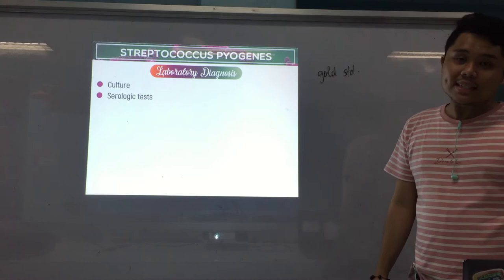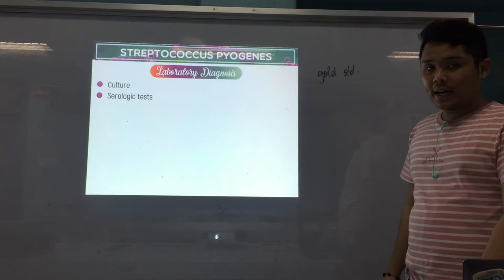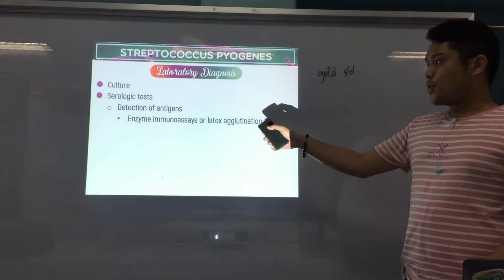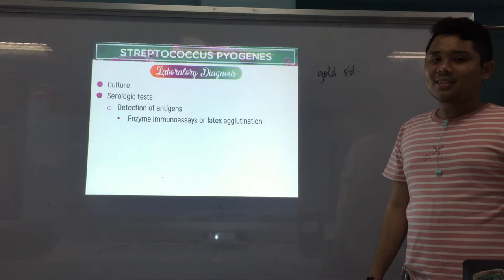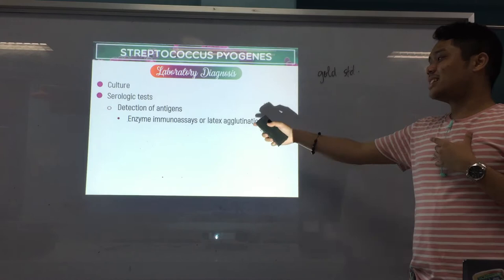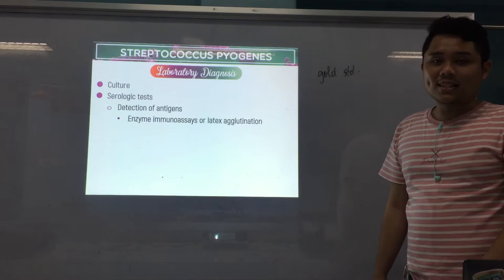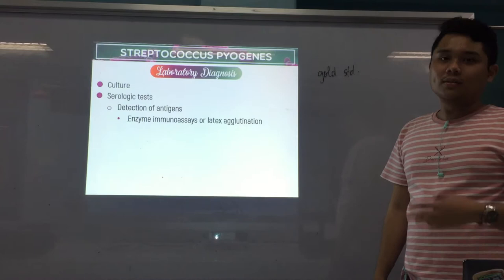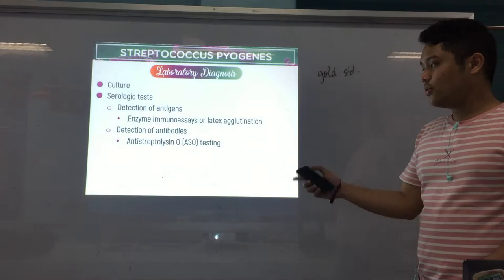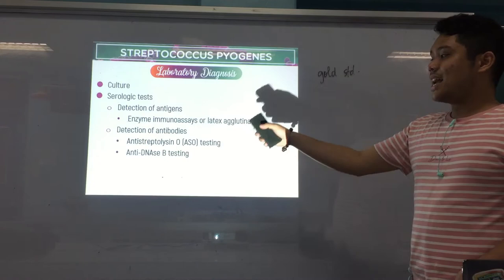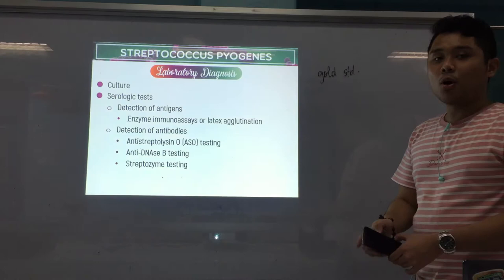The next is serological tests, which can be divided into two categories. Number one is the detection of the antigens of S. pyogenes, usually done through enzyme immunoassays or latex agglutination. And number two is the detection of antibodies — there are three types: ASO (anti-streptolysin O) testing, anti-DNase B testing, and streptozyme testing.